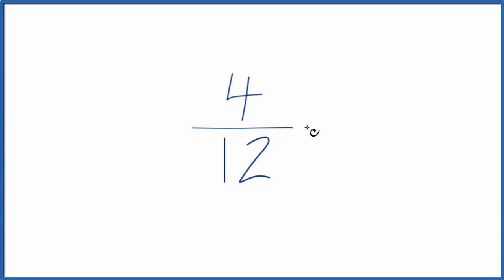Let's find three equivalent fractions for 4 twelfths. What we want to do is find fractions that are equal to 4 divided by 12. They have the same decimal value, it's just that their numerator and denominator are different.